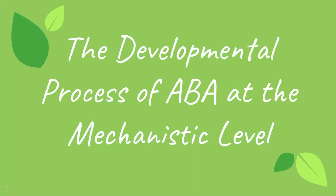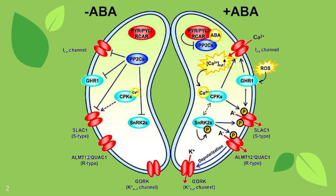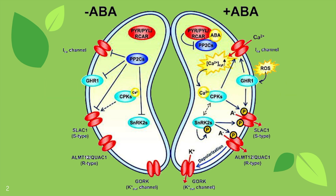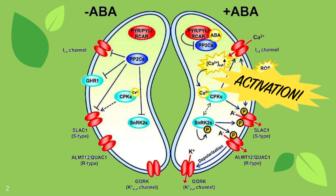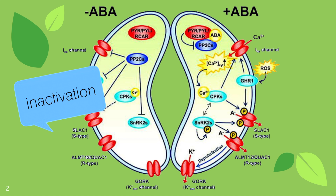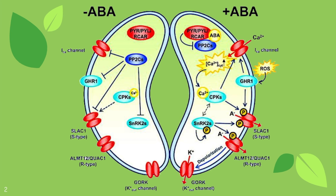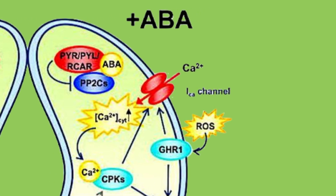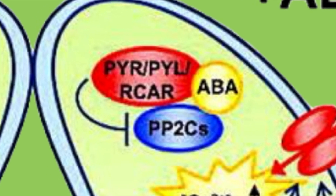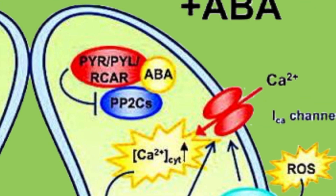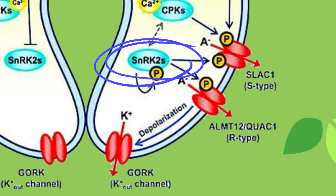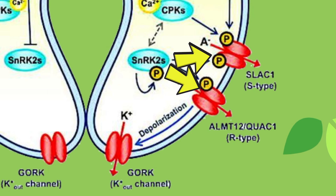But how does this happen? To answer this question and understand the developmental process of abscisic acid at the mechanistic level, we must first understand the cellular biology behind this. Here, you can see the signal transduction pathway in two different scenarios: during the presence of ABA to the right and the absence of ABA to the left. In the presence of ABA, we get activation of these ion channels for the stomata to close, where without it, we get inactivation of these channels for the stomata to remain open. Under stressful conditions such as drought, ABA will bind to these receptors to form a complex which will then inhibit PP2C. From this inhibition, the kinase SnRK2 is phosphorylated and therefore able to activate these transmembrane channels.